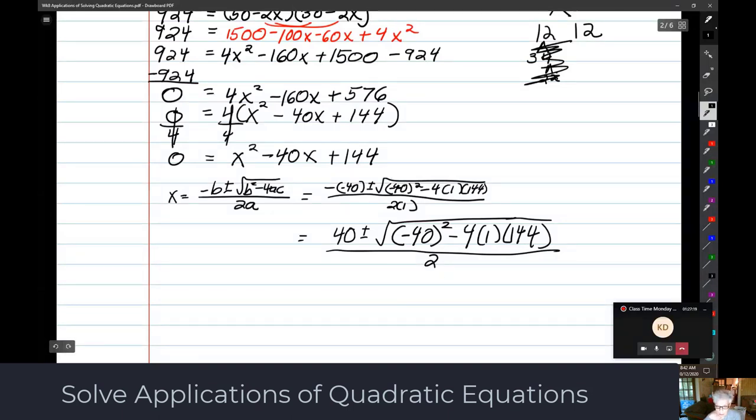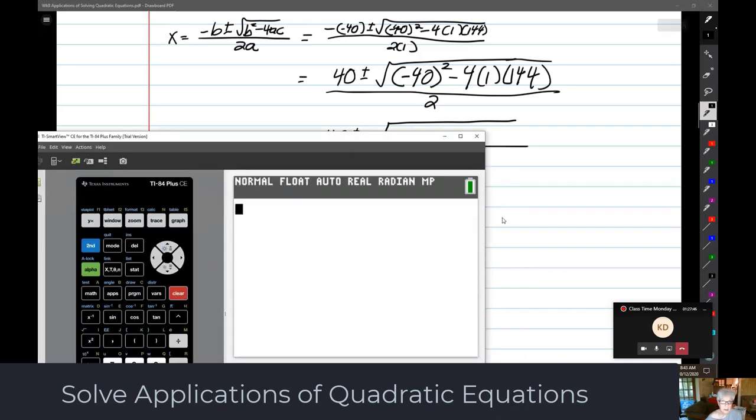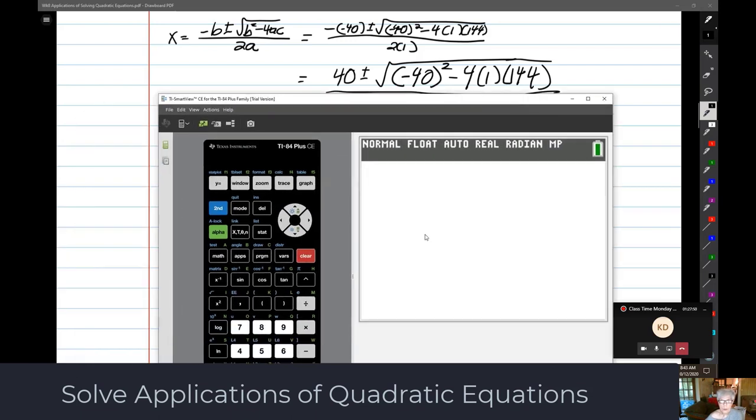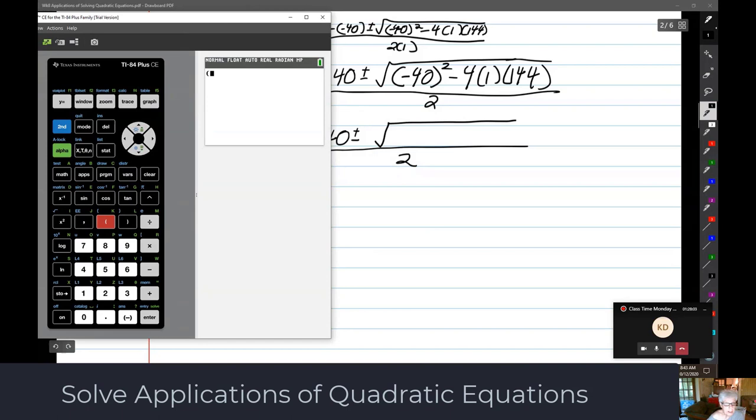What I like to do is figure out what it is under the radical first and kind of do it in steps because it's cleaner. So 40 squared minus 4 times 144.